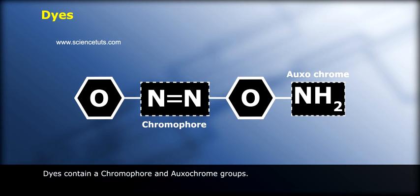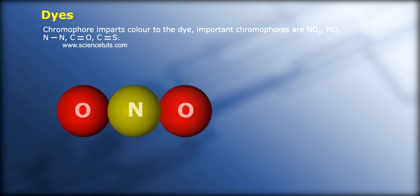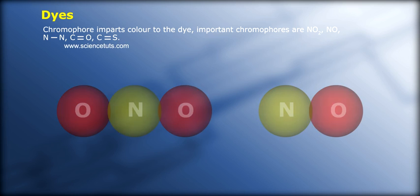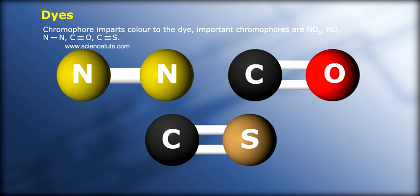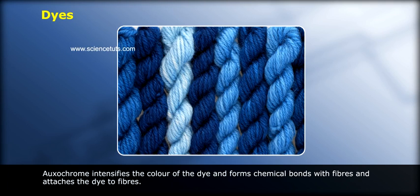Dyes contain chromophore and oxochrome groups. The chromophore imparts color to the dye. Important chromophores are: NO2, NO, N=N, C=C, and C=O bonds. The oxochrome intensifies the color of the dye and forms chemical bonds with fibers.